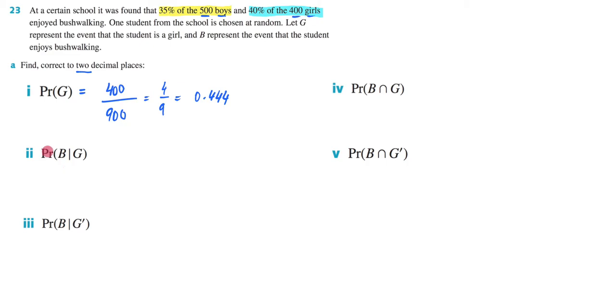Alright, next question. We're asked to find the probability that they enjoy bushwalking, given they're a girl. Now, this is really quite easy to find because they've given it to us in the question. We know that 40% of the girls enjoy bushwalking. So the answer is just going to be 0.4.